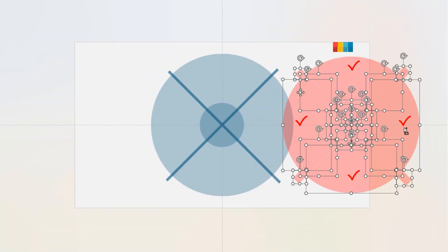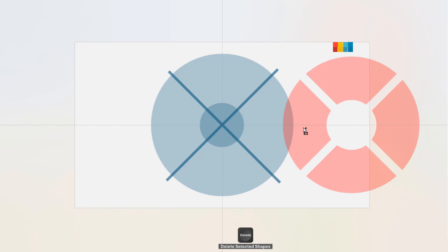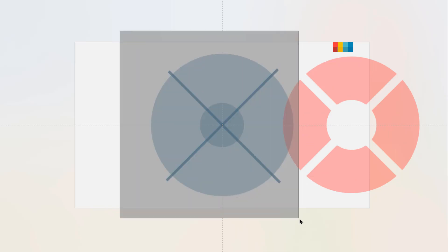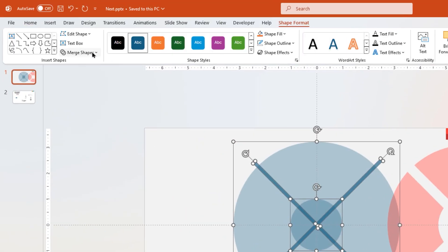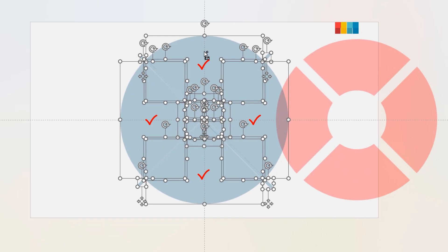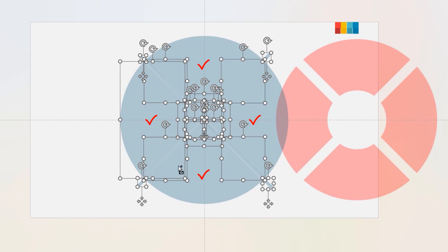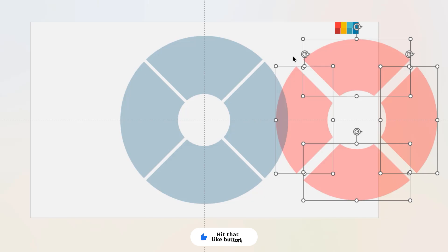Next, select all red color shapes and fragment them together. Drag these shapes aside, then select the required four sections and delete the other fragmented shapes. Now select the remaining set of shapes and fragment them together again, then select the required four sections and delete the other fragmented shapes.